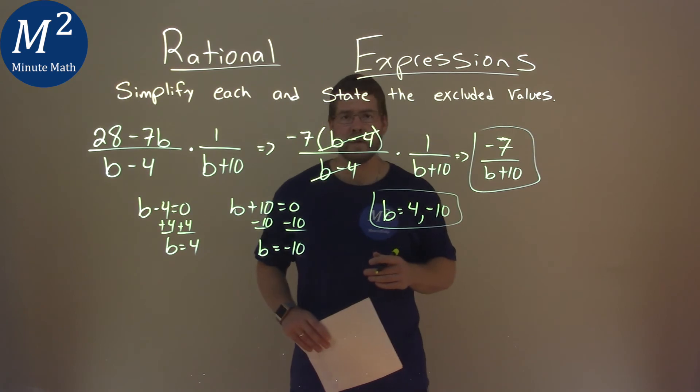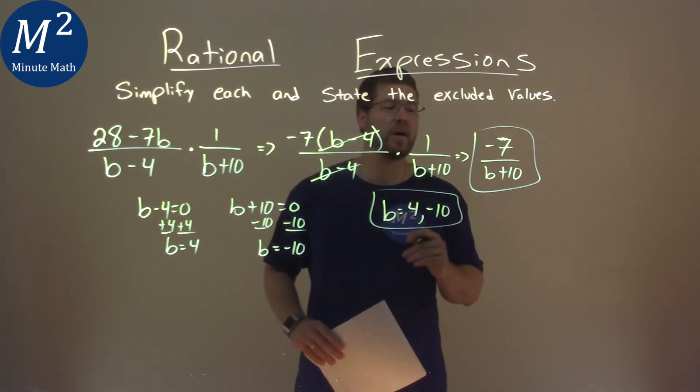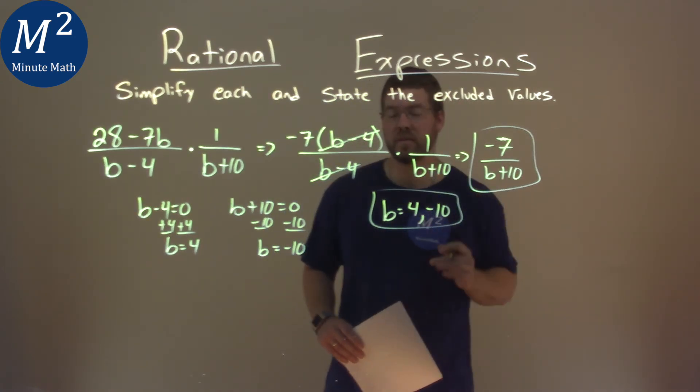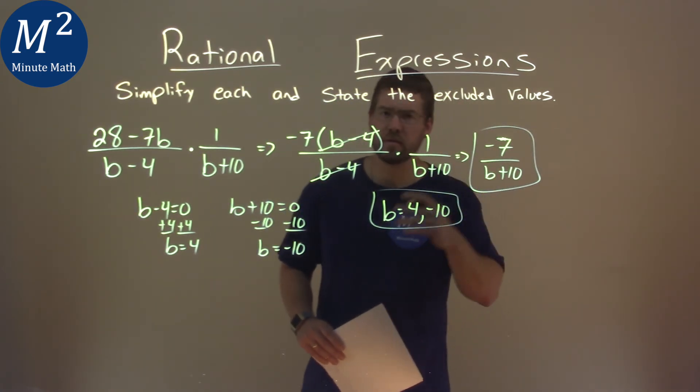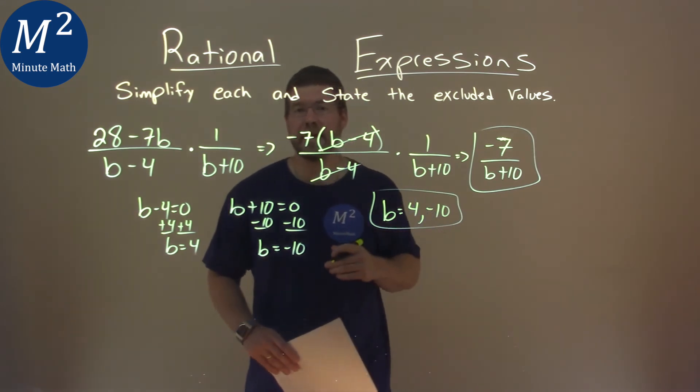And so our excluded values are when b is equal to positive 4 and negative 10. So our final answer, simplified, is negative 7 over b plus 10, and the excluded values are 4 and negative 10.